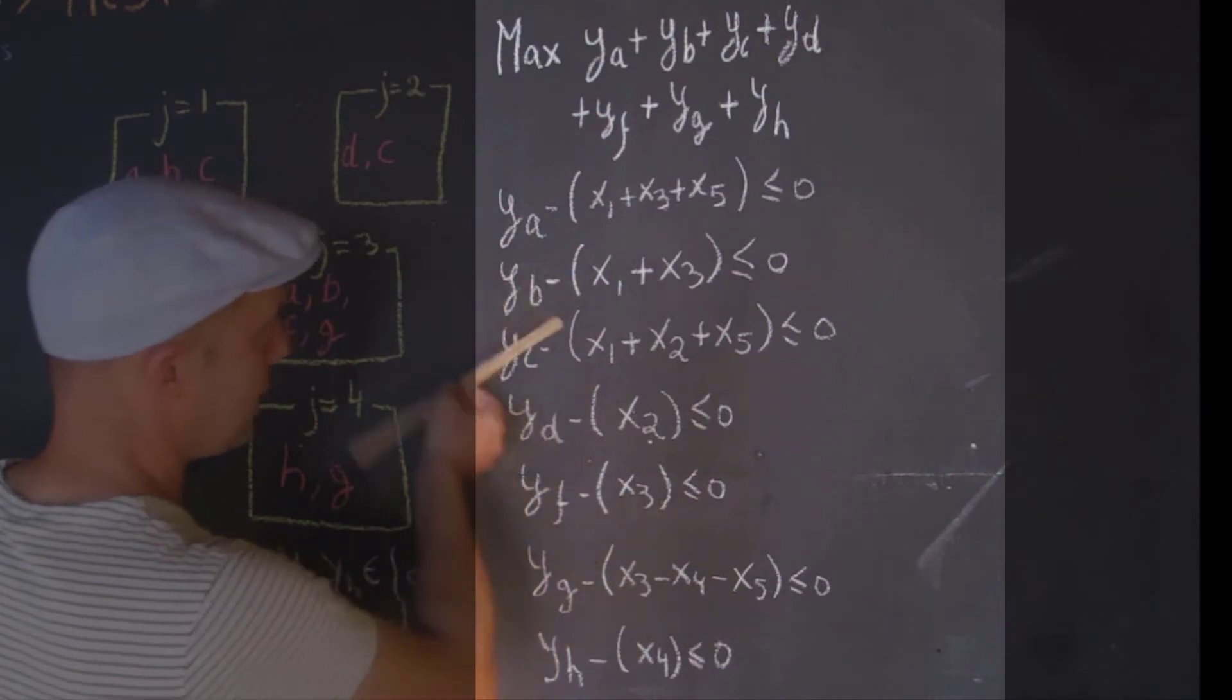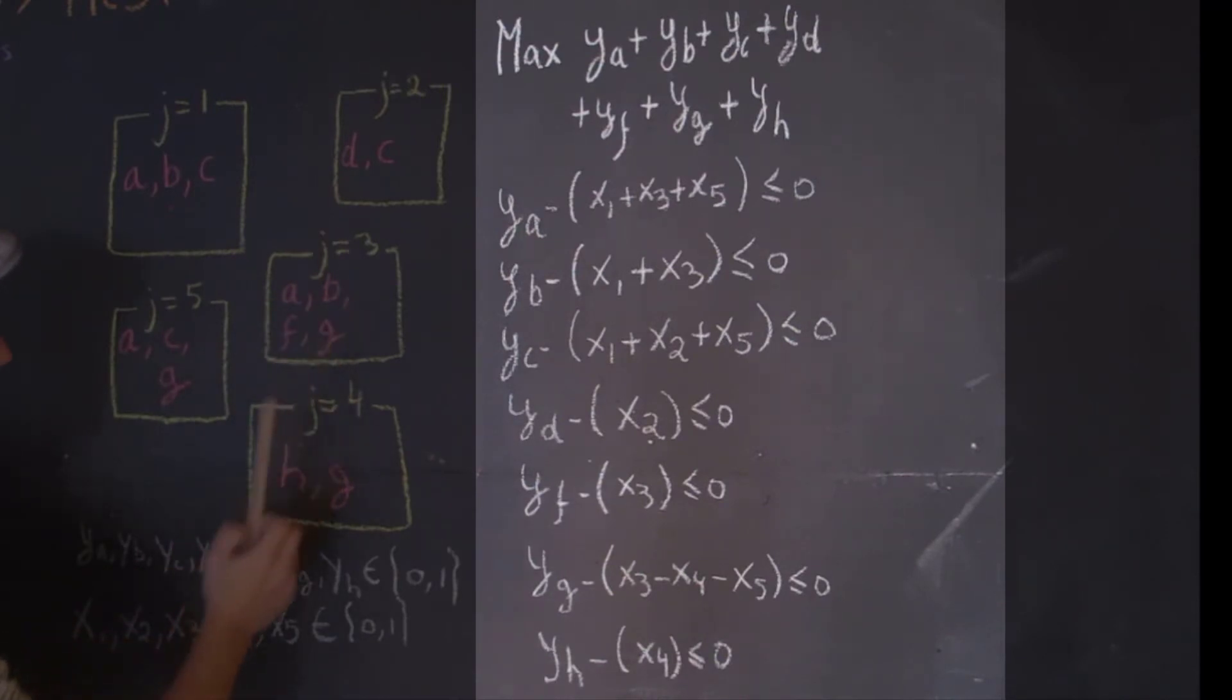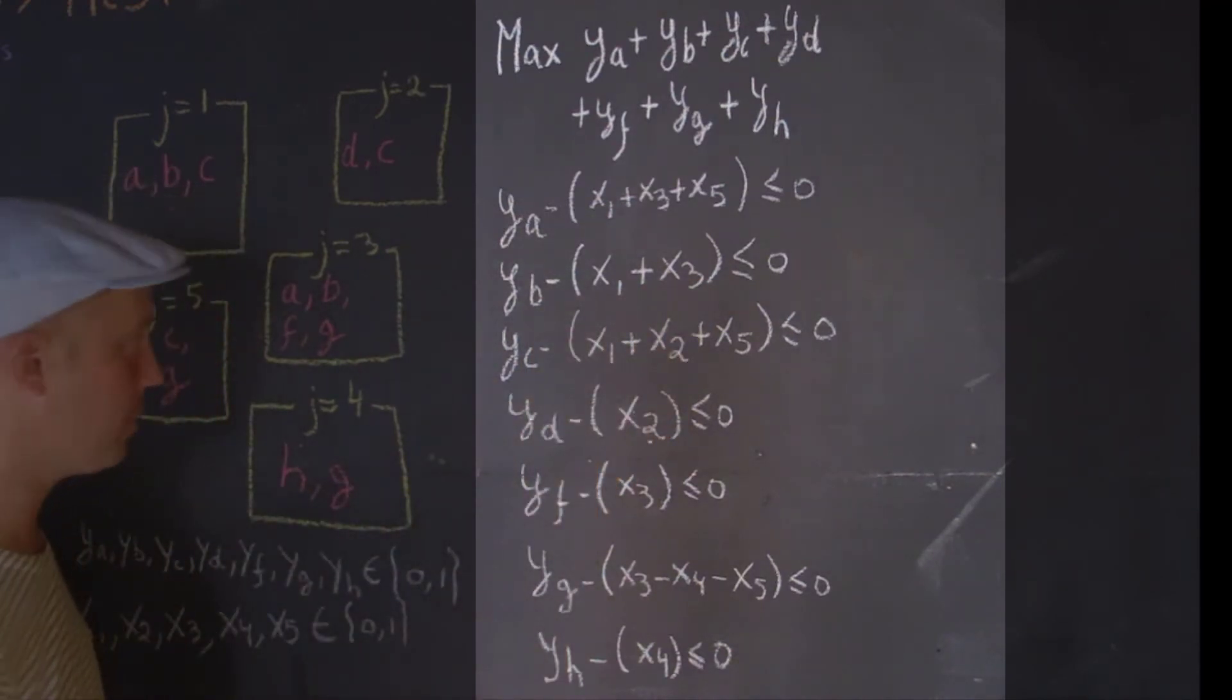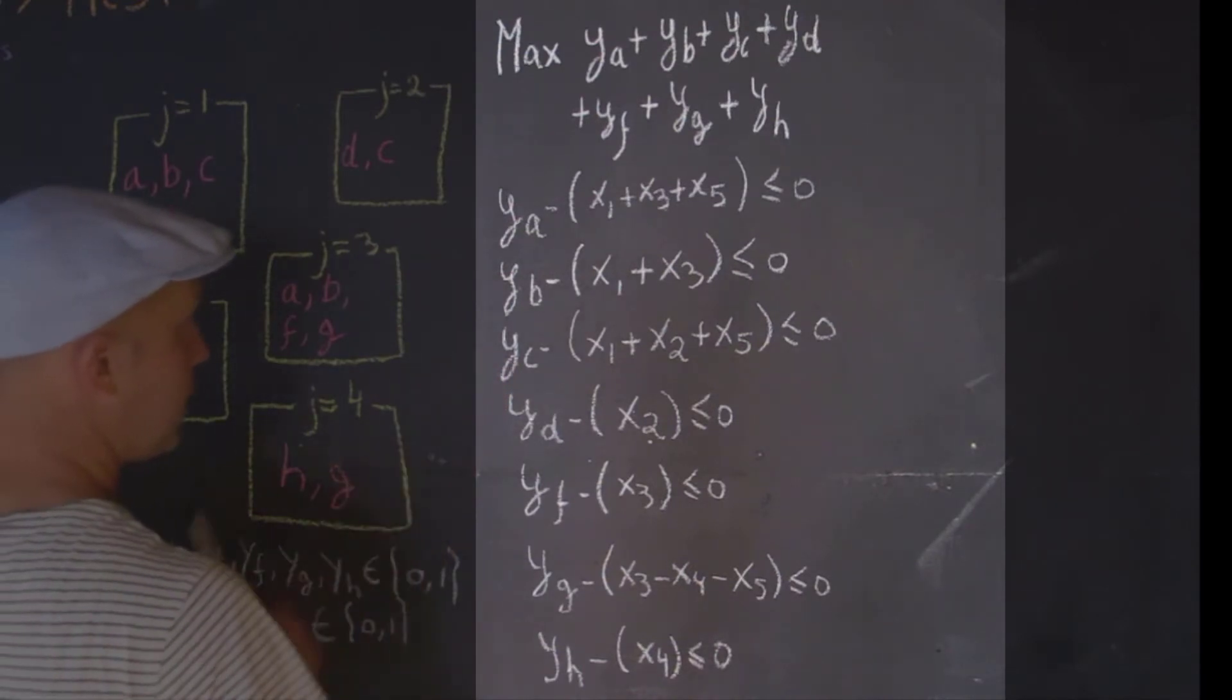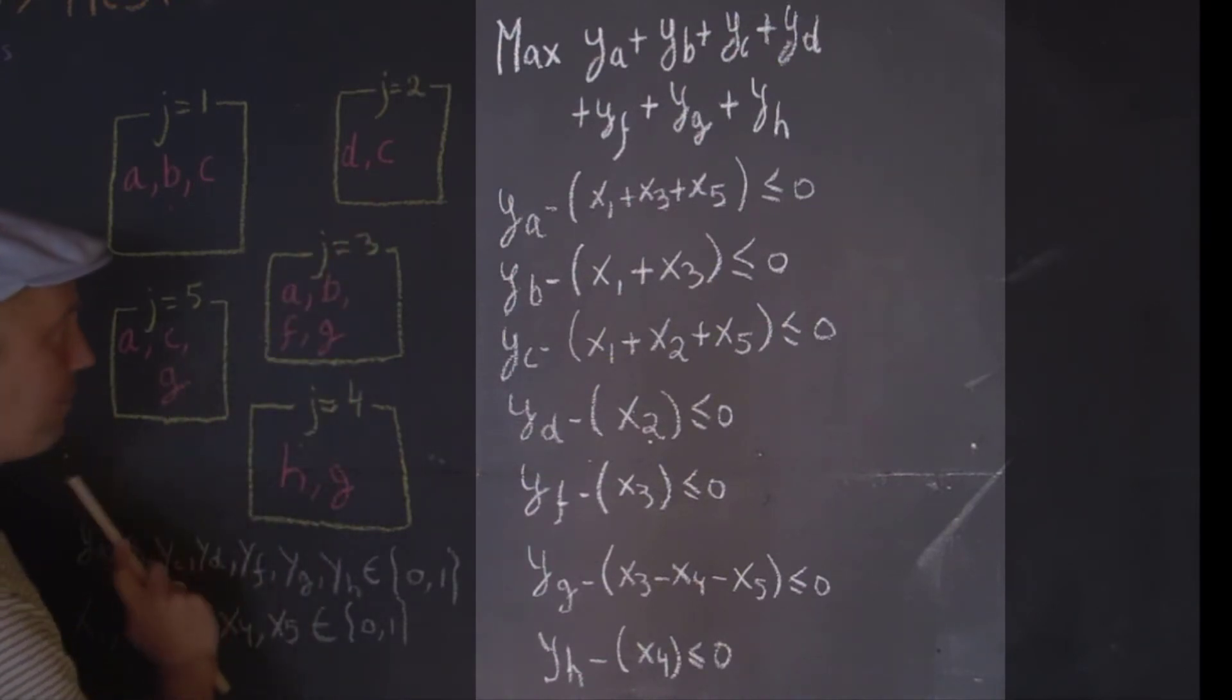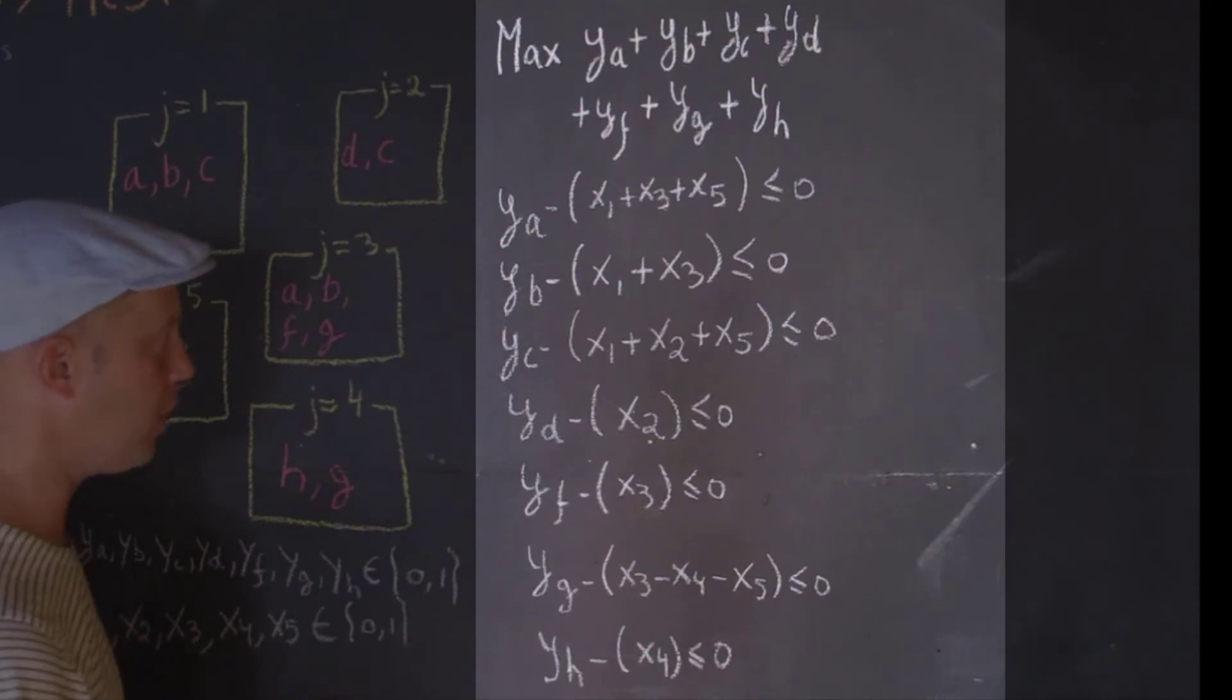Let's go to the second example here for B. So for B here, it appears in J equals one. It also appears in J equals three. That's it. So that's why you have YB minus the sum X1 plus X3 less or equal to zero. So we're going to go into this one here, which is YC. Species C appears in one, two, five. So you have one, two, five. And so on and so forth.